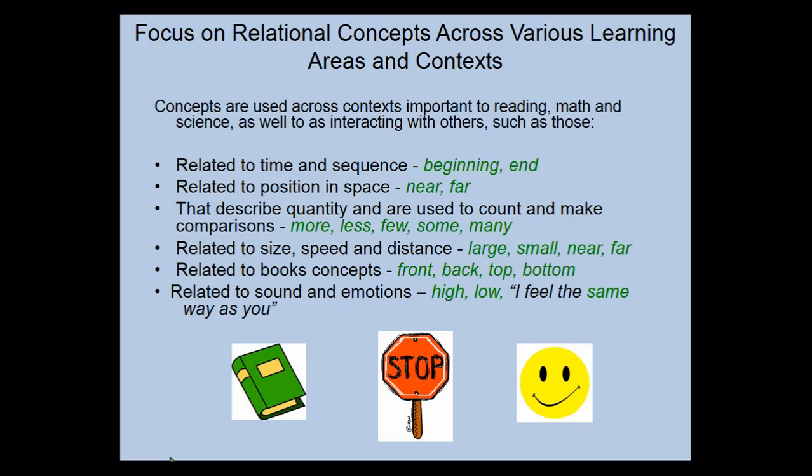They relate to size, speed, and distance—large, small, near, far. They're certainly important to general book concepts such as the front and back of the book, the top and bottom of the page, and that we begin reading from left to right in English. They're also related to sounds and emotions—as we hear high and low sounds, or 'I feel the same way as you.' So they're important across all areas of life for young children.